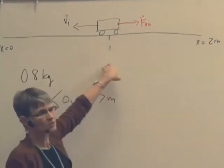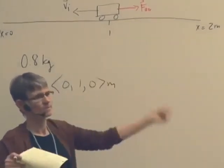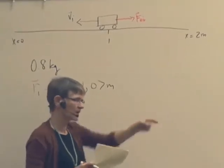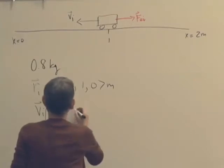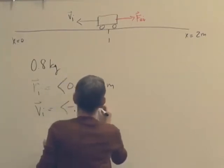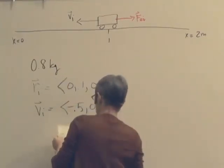At the moment we start looking at it, it's already moving. I had already given it a push. And so its initial velocity is negative 0.500 meters per second. It's going in the negative x direction.